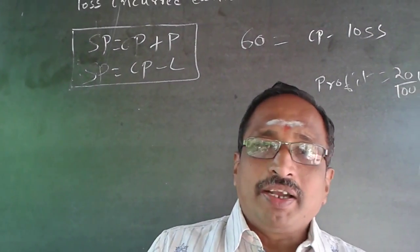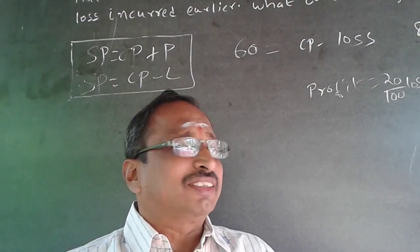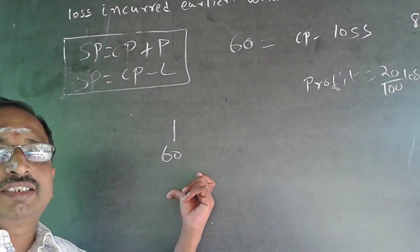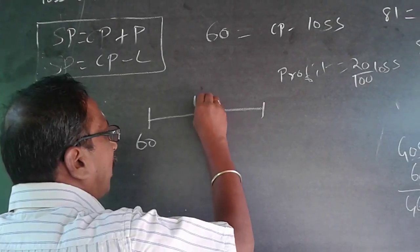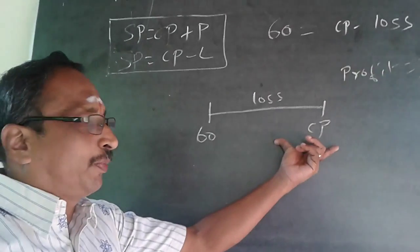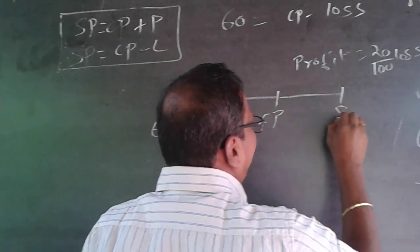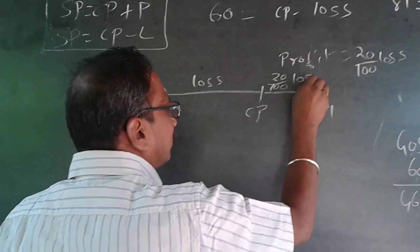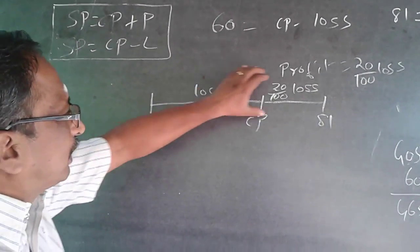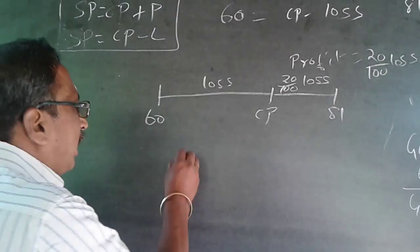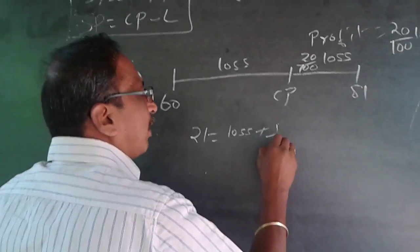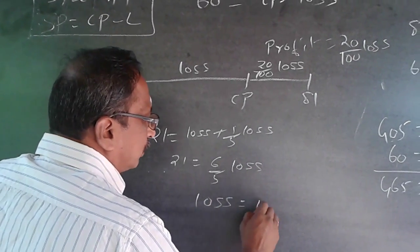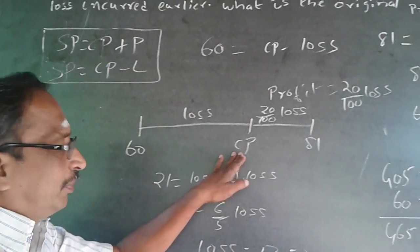Now the shortcut: on a number line, 60 is the selling price at loss and the cost price is higher. Going from 60 to 81, the gap of 21 equals the loss plus 20% of loss, which is loss + 1/5 loss = 6/5 of loss. So 21 = 6/5 × loss, giving loss = 17.50. Therefore CP = 60 + 17.50 = 77.50.